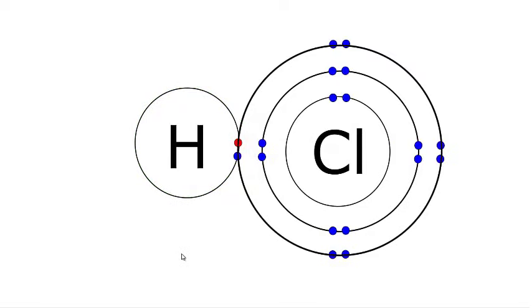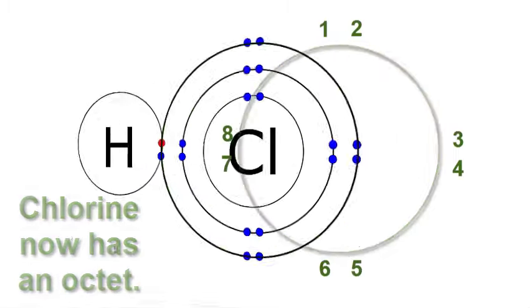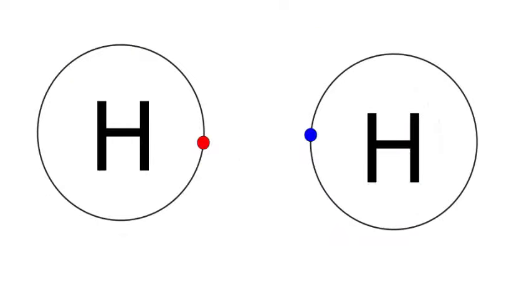The chlorine had seven, but by sharing with the hydrogen, it now has eight. That's a full outer shell for chlorine, and it's called an octet.